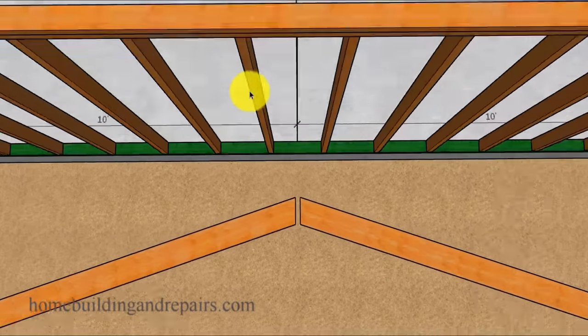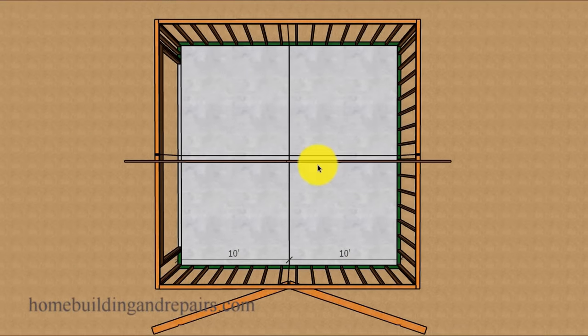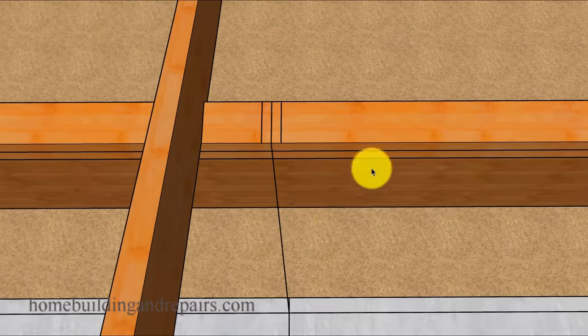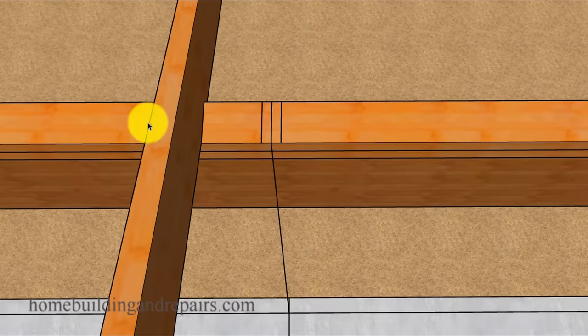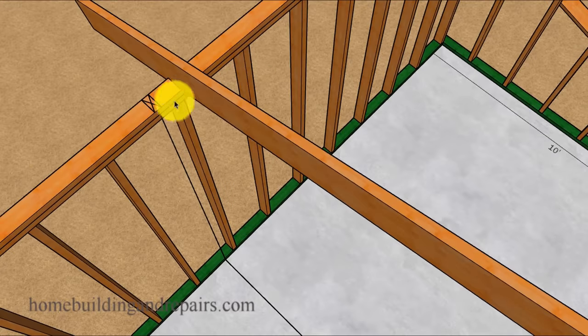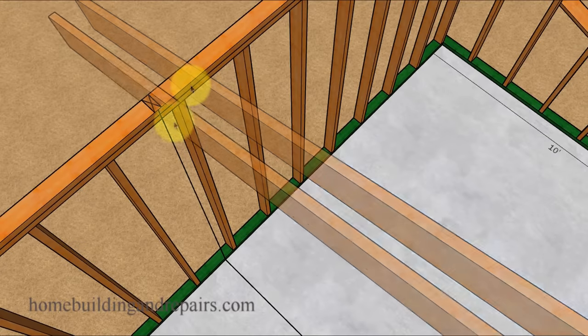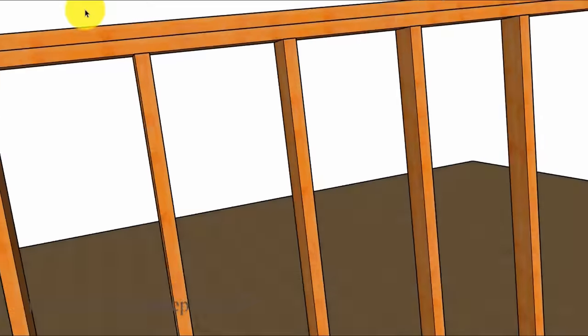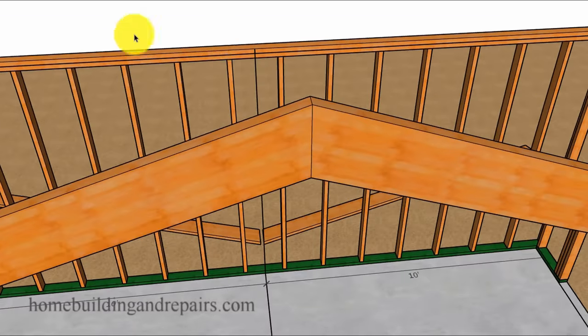As we position the common rafters, we're going to start with the first two that meet together and place them in the center. You can see here where the center line comes up. Our rafters are an inch and a half wide. So to figure the center, we're going to need to go three quarters on each side for the rafters to be positioned in the center.